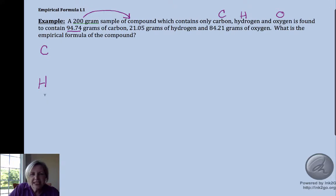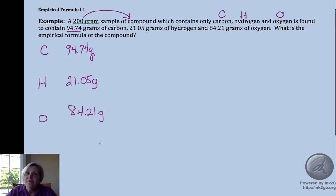I like to set this up as if it's kind of a spreadsheet, because remember, all for one, one for all. It's that kind of cheerleading thing. Whatever we do to one element, we're going to do to the data for all the elements. So let's take a look at carbon. We have 94.74 grams of carbon, we have 21.05 grams of hydrogen, and we have 84.21 grams of oxygen.